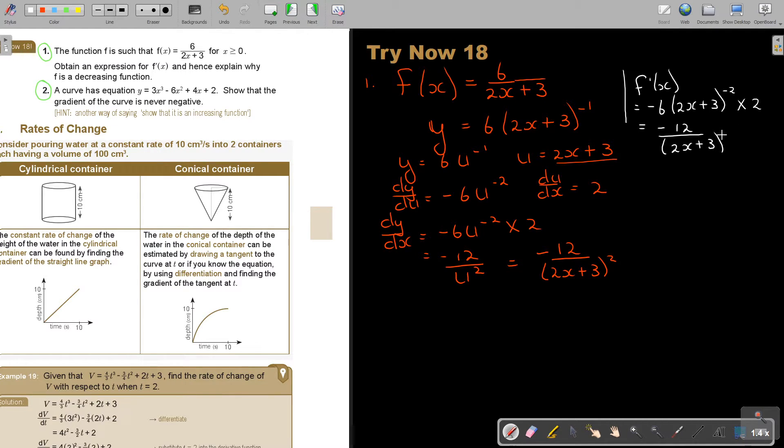And that will give me negative 12. And I just bring it down which is 2x plus 3, and it's just going to be squared. And if you check here this is exactly the same as that. So get used to the short method, especially if the sums become a little bit longer.